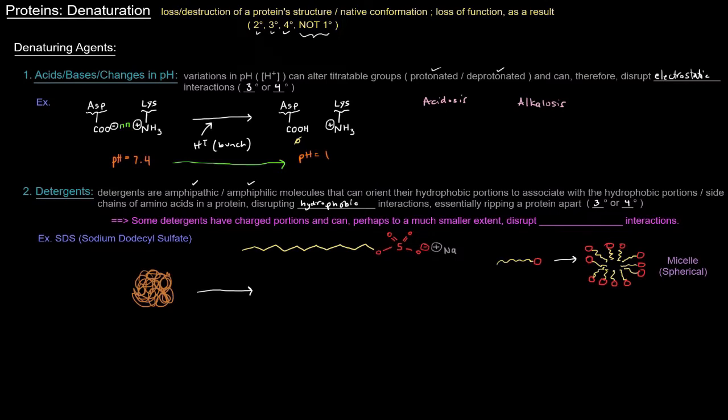Some detergents have charged portions. They're not just polar and nonpolar. They're actually charged. And if that's the case, they can actually, even though to probably a much smaller extent, disrupt electrostatic interactions. But not all detergents are like that. Here, SDS or sodium dodecyl or dodecyl sulfate. This means 12. Dodec. That's 12. And so, there's 12 carbons here. And then that sulfate group. And then that's sodium ion right here. That is a detergent.